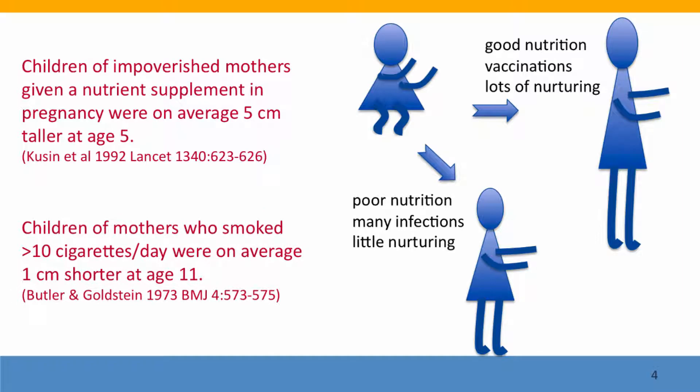Another component of the environment is maternal smoking. If the mothers smoked, the children were on average about a centimeter shorter at age 11 than if their mothers didn't smoke. These are clearly environmental effects on a trait that we think of as being primarily genetic.